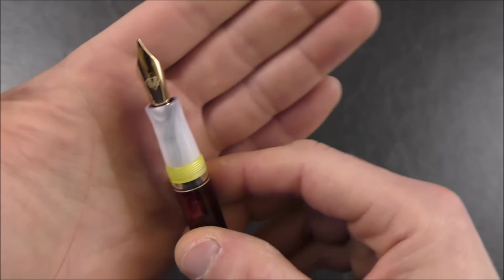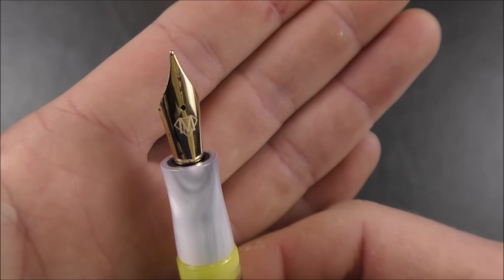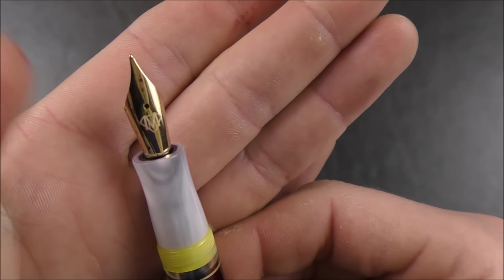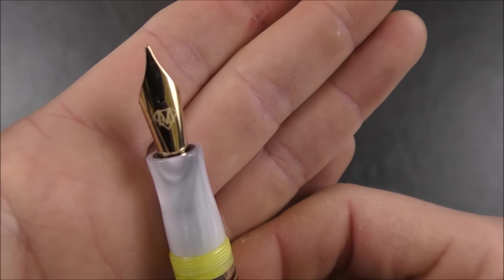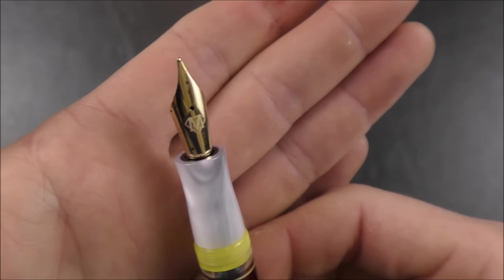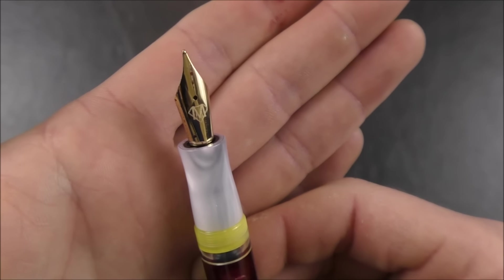So I mentioned this was a number six medium nib made by Peter Bach. They only come in medium at the moment. That M, by the way, is the Marte Modena logo, not signifying that it's a medium nib. They only come in medium for now, but they are going to offer other sizes later.